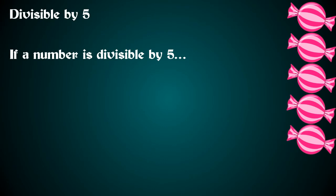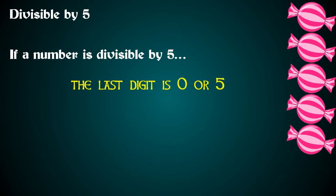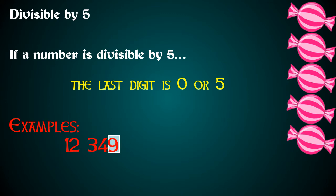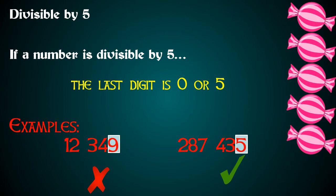What about numbers that are divisible by 5? If a number is divisible by 5, the last digit is 0 or 5. Let's look at this example: 12,349. The 9 is not a 0 or 5, so this number is not divisible by 5. What about 287,435? The last digit is a 5, so that means this number is divisible by 5.